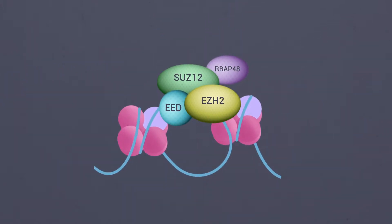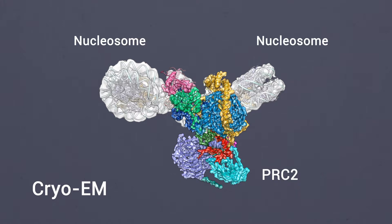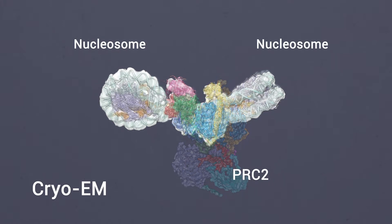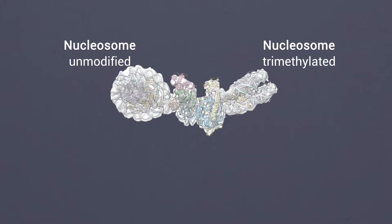In this study, we provide direct visualization of PRC2-chromatin interactions through cryo-electron microscopy structures of PRC2 in the specific context of dinucleosomes containing one unmodified substrate nucleosome and one activating nucleosome in which lysine-27 on histone H3 is trimethylated.